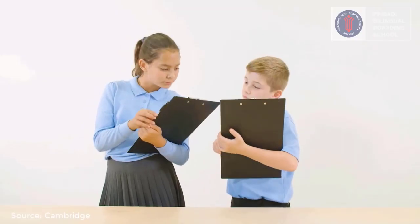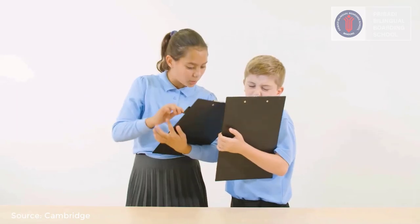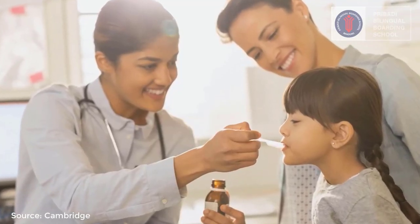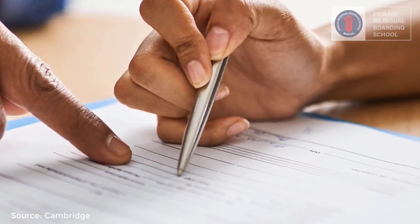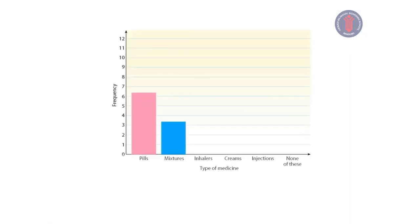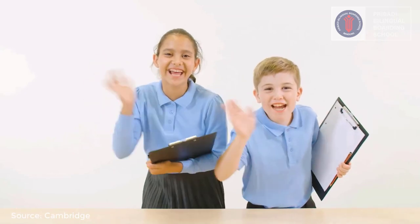What have we found out in today's investigation? A survey is a good way to find out information from people if we use simple, easy-to-understand questions. We can use a data collection sheet to tally and count the answers from the survey. We can draw a bar chart to show the numbers of people or things in different groups that we have counted or measured. Thanks for watching.